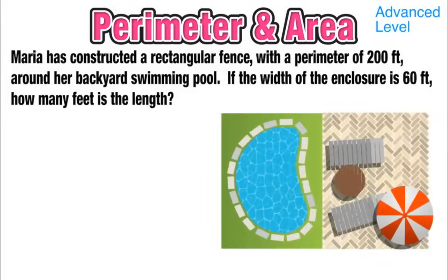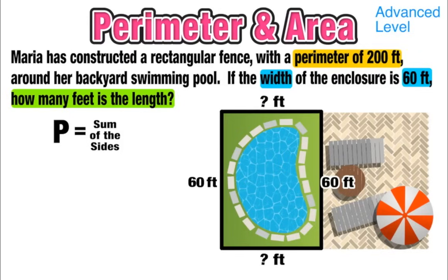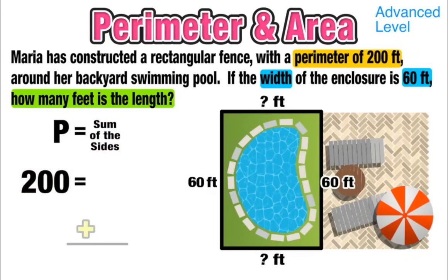Now for a more advanced example. Maria has constructed a rectangular fence with a perimeter of 200 feet around her backyard swimming pool. The width of the enclosure is 60 feet, so I draw a diagram and label both widths as 60. What I need to find is the length — labeled with a question mark. Since perimeter equals the sum of all sides, taking the two widths of 60 plus the two unknown lengths must equal 200.